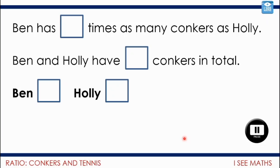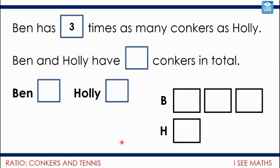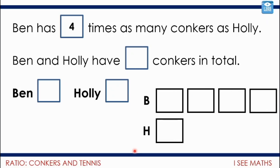Let's have a look at some possibilities. If Ben has three times as many conkers as Holly, that's represented by that drawing. If Ben and Holly have eight conkers in total, Ben would have six and Holly would have two — three times as many, eight in total. If Ben has four times as many, I need five parts. With 40 conkers in total and five sections, that's 8 in each section, so Ben has 32 and Holly has 8. 32 is four times more than 8.